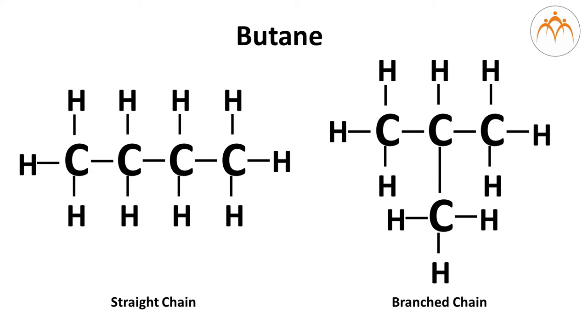These two molecules of butane that have the same molecular formula but different structural formula are isomeric compounds with the formula C4H10. The phenomenon in which compounds have different structural formulas and the same molecular formula is called structural isomerism. The number of carbon compounds increases due to the isomerism observed in carbon compounds.